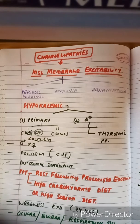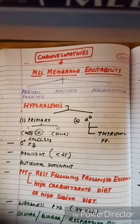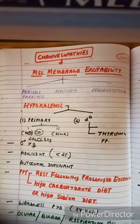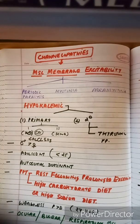First and very important: hypokalemic periodic paralysis. Though the name is hypokalemic, it is a disorder of the calcium channel. It is of two types — primary and secondary. Secondary means the potassium deficiency is due to a secondary cause, or it can be due to thyrotoxic periodic paralysis. In primary, there is a primary defect in the calcium channel — the channel affected is CACNA1A3. Remember that.